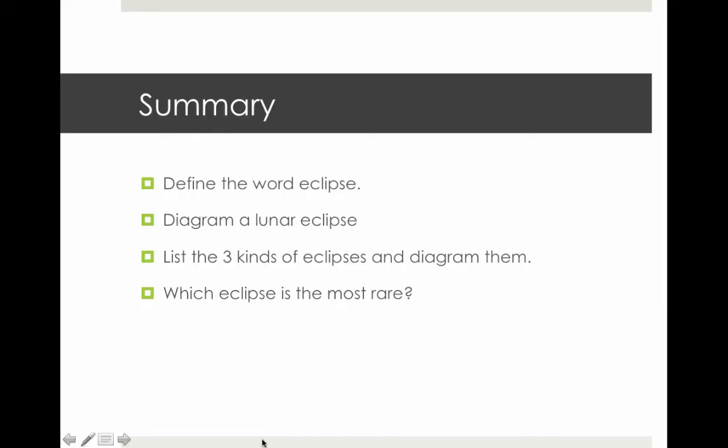So define the word eclipse. I'd like you to diagram a lunar eclipse — pay really specific attention to the sizes of the earth, moon, and sun. List the three types of eclipse that the last video showed you and diagram them, and identify which one of those three is the most rare. As always, thanks for watching, and I'll see you in class.